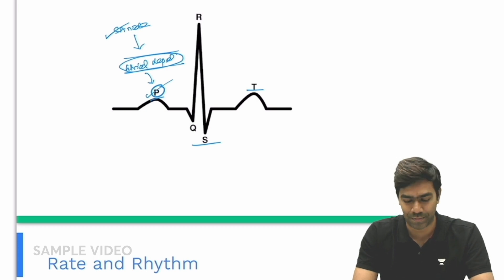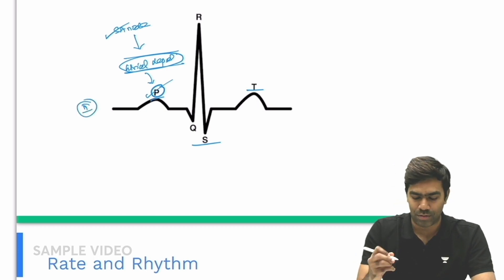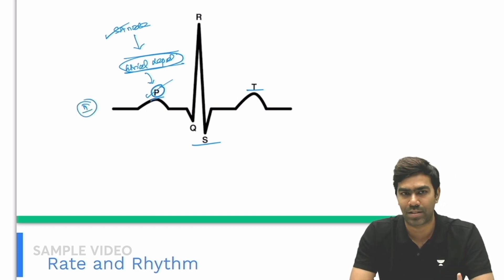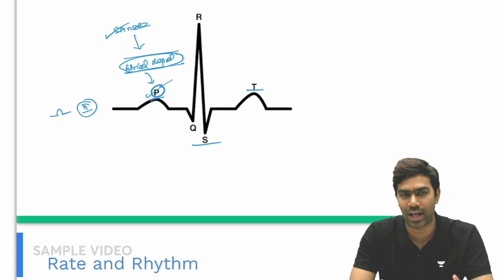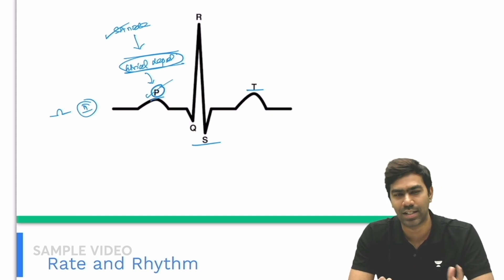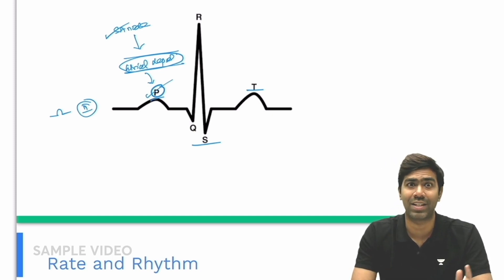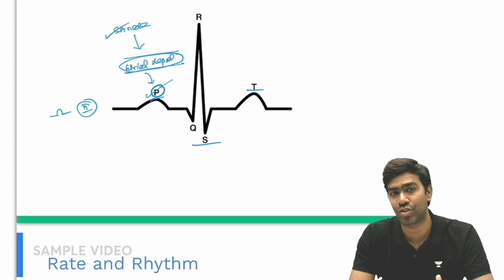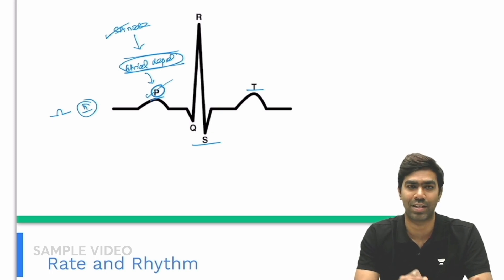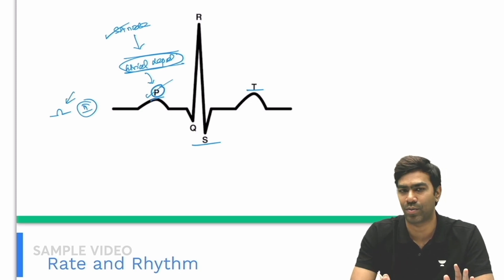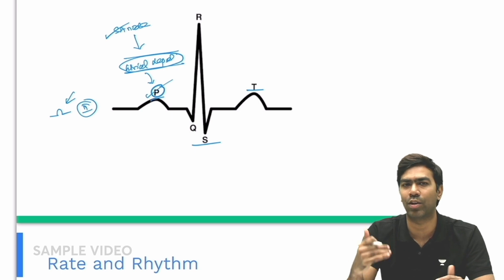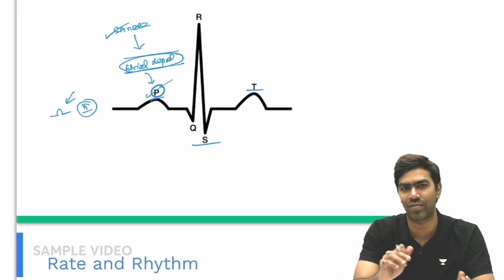The best leads to look at the P wave are Lead II and Lead V1. In Lead II, the P wave should normally be erect and upright. If it is negative, it still indicates atrial depolarization but suggests it is coming from a source other than the SA node. If the SA node is driving atrial depolarization, the P wave should be upright; an inverted P wave suggests an ectopic atrial focus apart from the SA node.